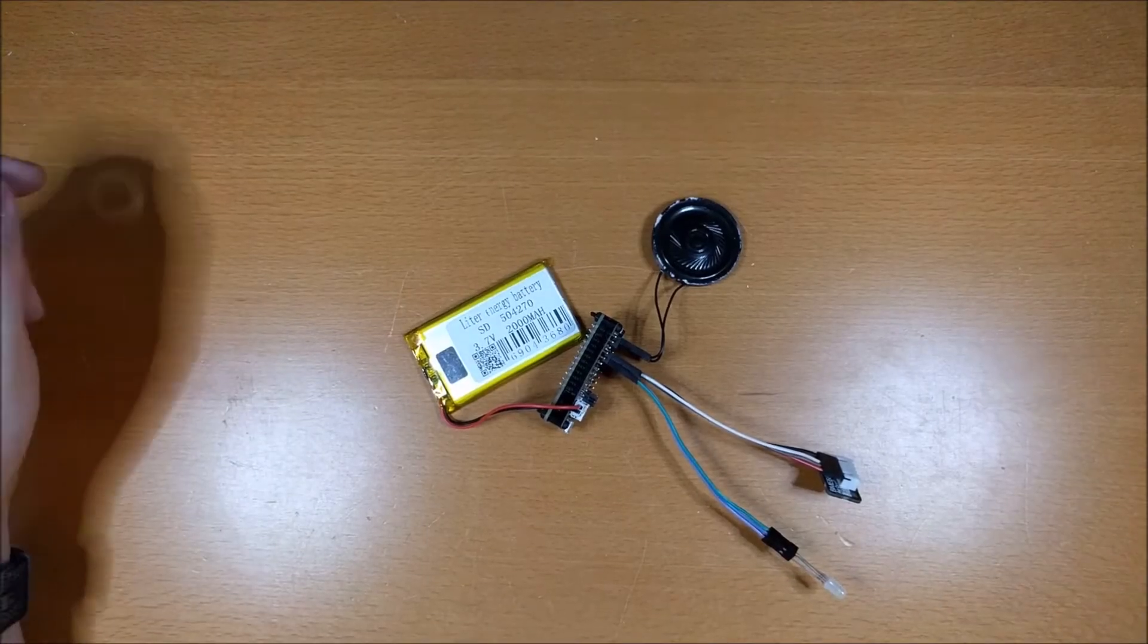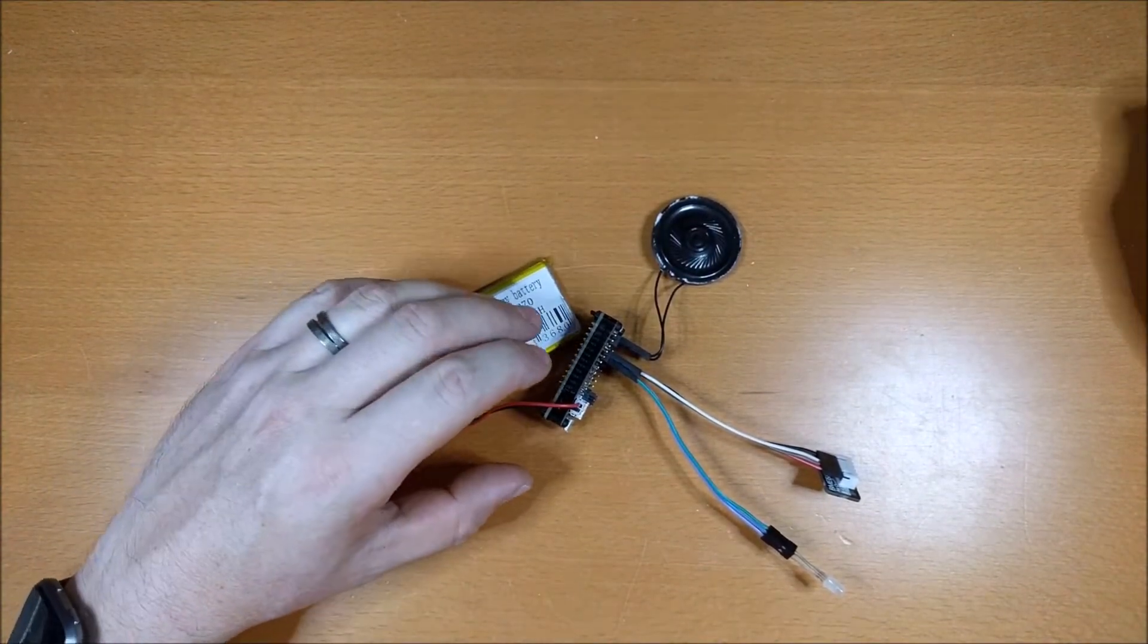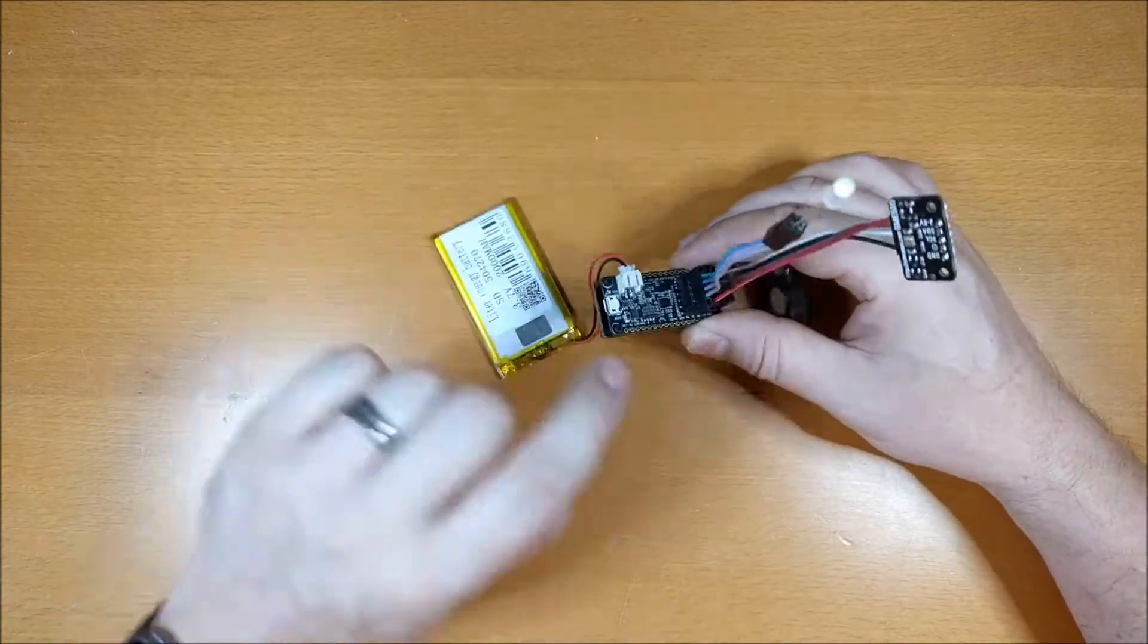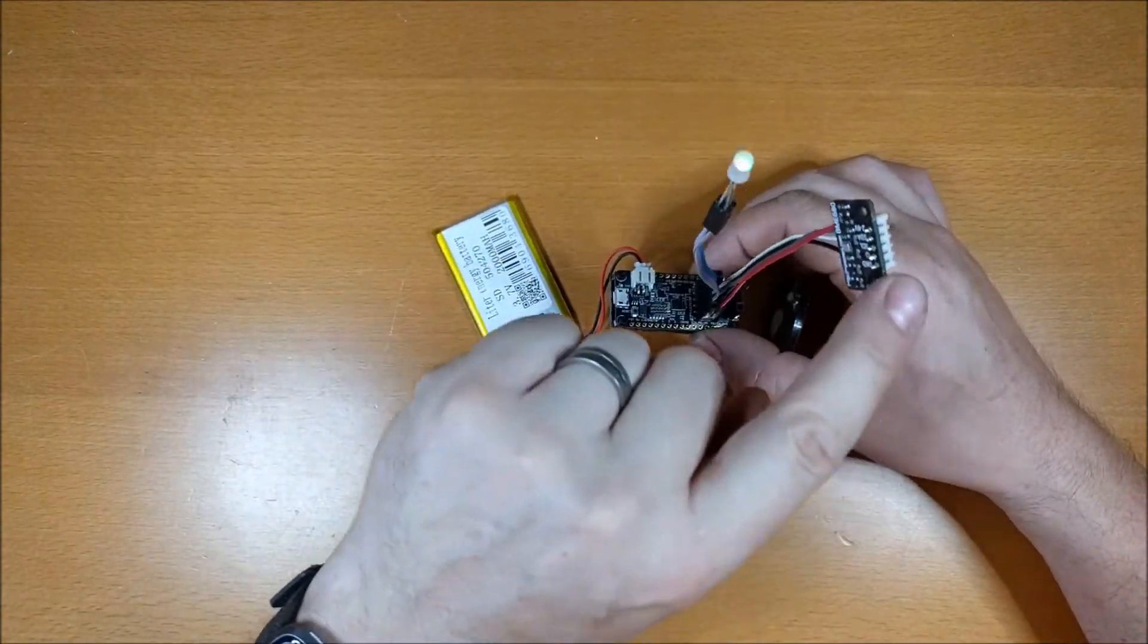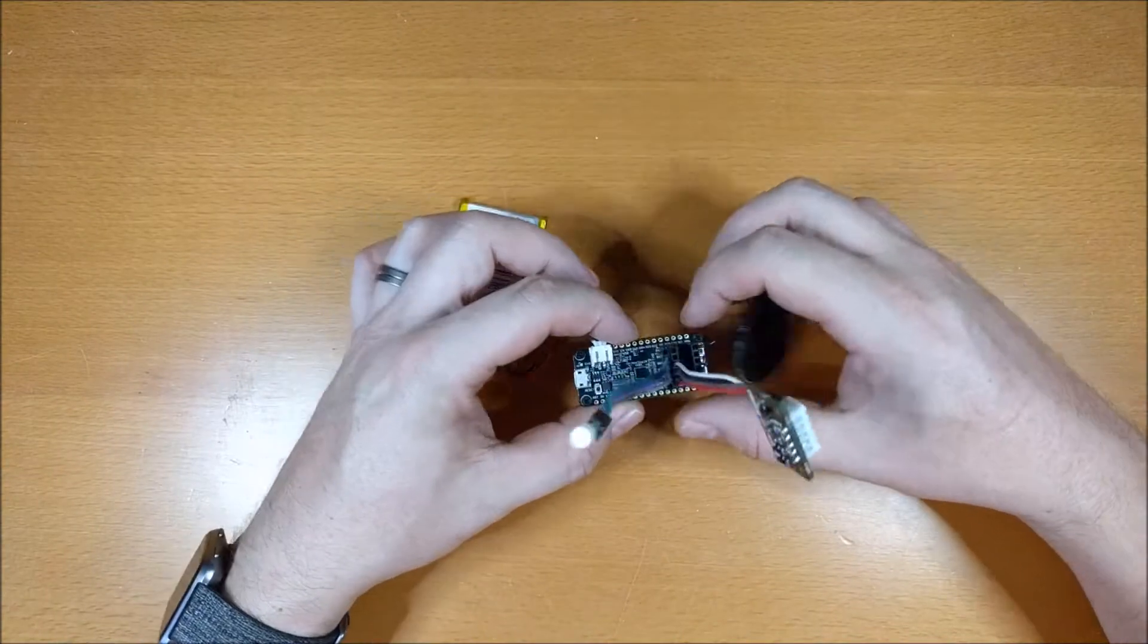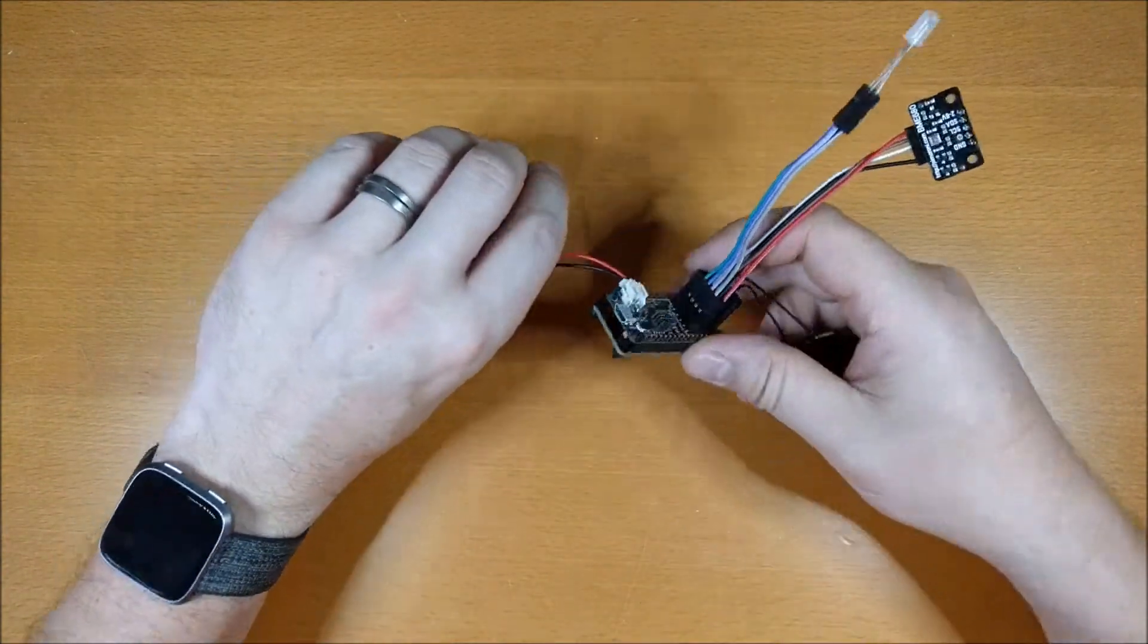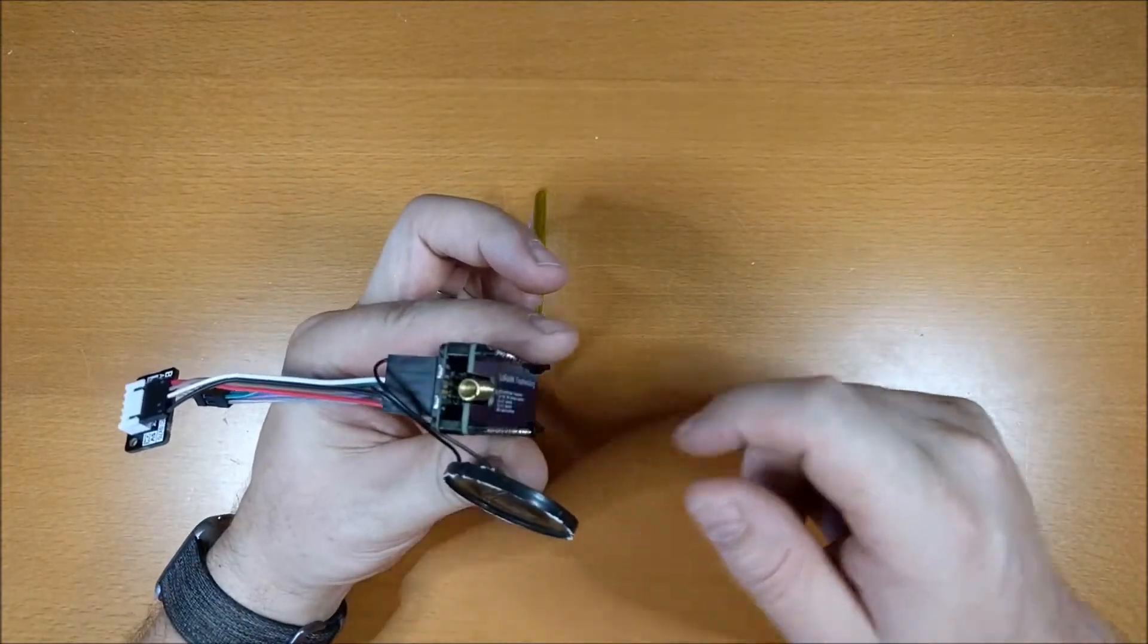For my Chirp project, based on the Maxim integrated feather head, which is this, the Maxim feather, an LED, the BME 680, a little speaker, a battery and a LoRa feather wing head on the bottom of it, which has an included antenna.